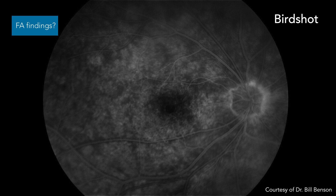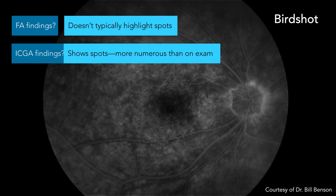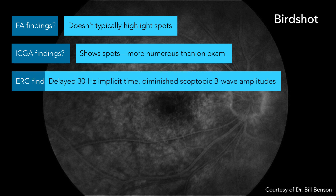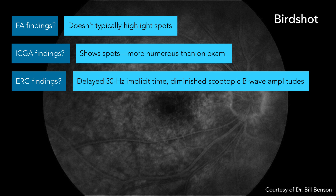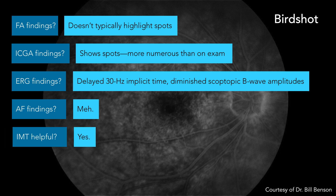FA findings: doesn't typically highlight your spots, but it's going to show you your CME, optic nerve head leakage, some vasculitis, a little venulitis. ICG is also going to show your spots, and they're going to be more numerous than on exam — those choroidal hypofluorescent spots. ERG findings: you only need ERG findings for two of these diseases, maybe three if you include AZOR. For birdshot, it's delayed implicit time on 30 Hz flicker, and you get diminished scotopic B waves — that's one line worth memorizing. Autofluorescence findings: not super helpful in following the disease, in my opinion. IMT is helpful. So that's more or less what you need to know about birdshot in a nutshell.